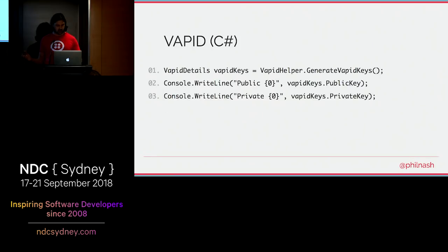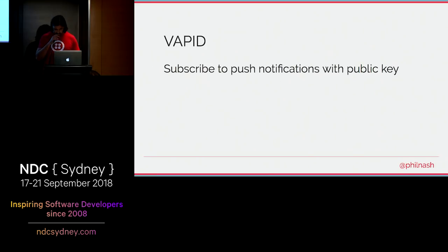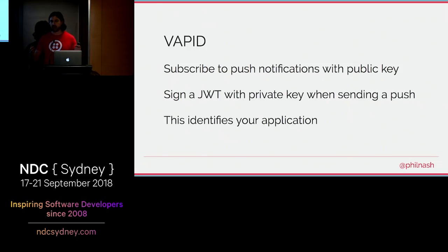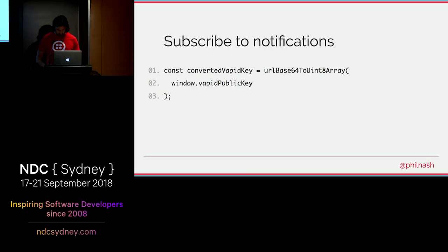If you're doing it in C#, there's a Web Push library there too which will generate VAPID keys. You only ever need to do this once — you then store that public and private key on your server. You use that public key as part of the subscription and the permissions request when asking for permission. Then when you send push notifications, you sign a JSON Web Token using the private key, so the browser's push service can verify and identify your application as the one that originally signed up.